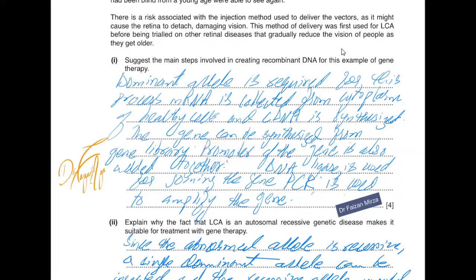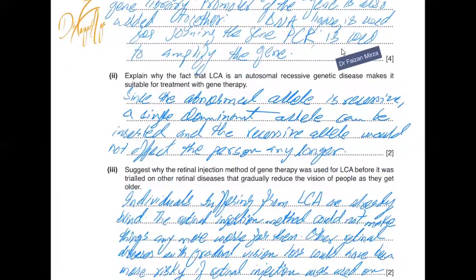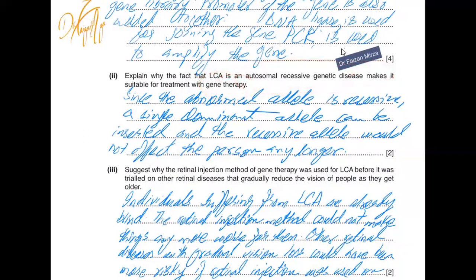DNA ligase is used for joining the gene during the process. PCR is used to amplify the gene so that it becomes available in large quantities for experiments. LCA being an autosomal recessive genetic mutation makes it suitable for treatment with gene therapy, since all autosomal recessive genetic diseases can be targeted — the dominant allele can be inserted.